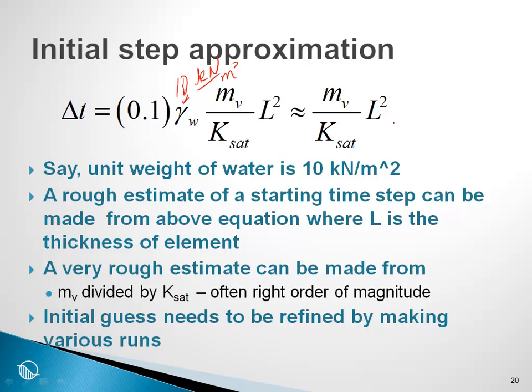If we were to substitute into this equation a time factor of 0.1 and the unit weight of water is 10 kilonewtons per meter cubed, then this equation reduces to approximately M sub V over K sat times L squared. Although this is a rough estimate of a starting time, it does help in getting an opportunity to make a rough estimate of a starting time where L is the thickness of the element.